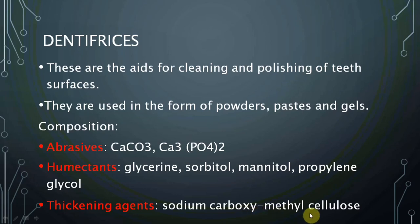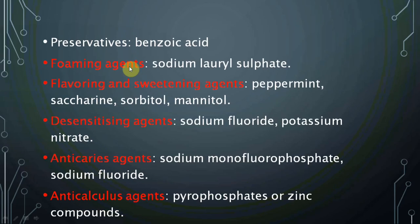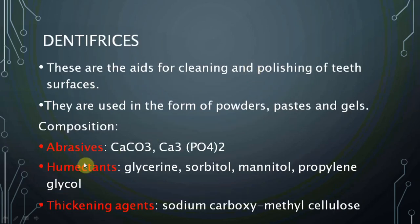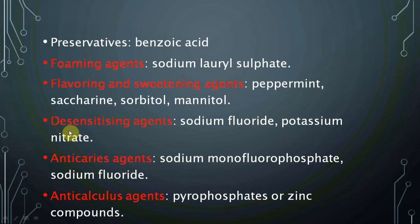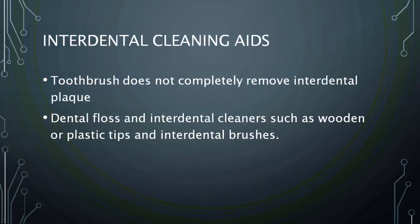The thickening agent in dentifrices is sodium carboxymethyl cellulose. The humectant retains humidity and wettability, making the toothpaste easier to apply compared to tooth powder. The foaming agent is sodium lauryl sulfate. Other components include preservatives such as benzoic acid, flavoring agents like peppermint and saccharin, desensitizing agents like potassium nitrate or sodium fluoride, anti-caries agents like sodium monofluorophosphate, and anti-calculus agents such as pyrophosphates or zinc compounds.